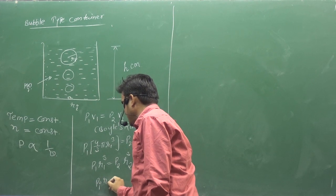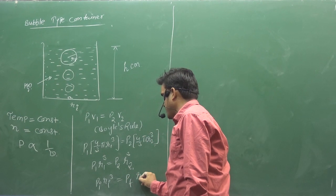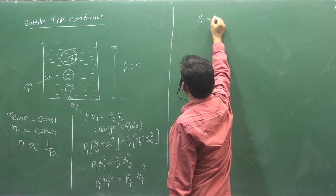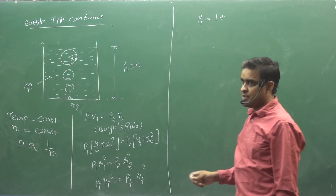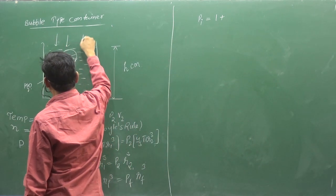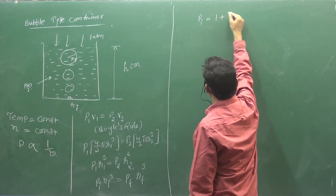I write P initial R initial cube, P final R final cube. You can tell how much P initial is in this place? 1 plus. 1 is atm pressure. It's going up here. 1 is atm pressure. Now, 1 plus. What will we have?